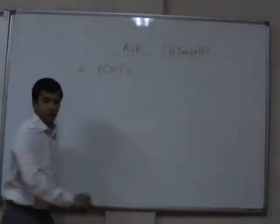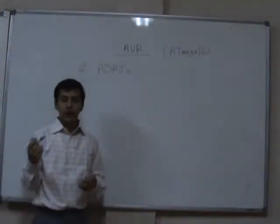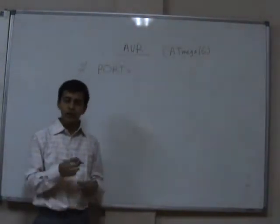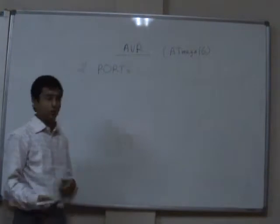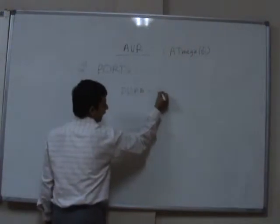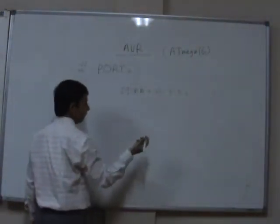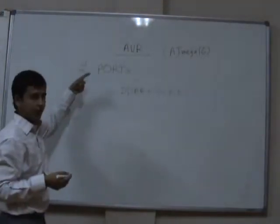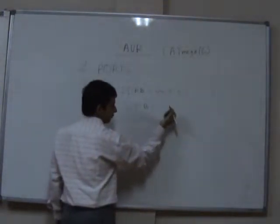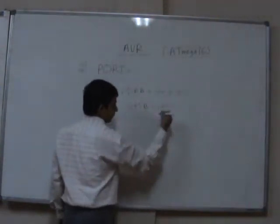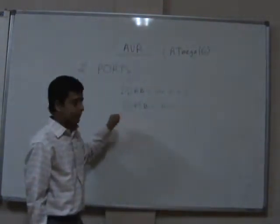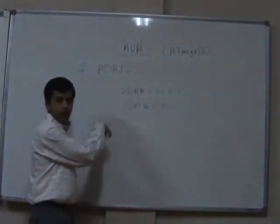Suppose we have configured a particular port as an output port and we want to write data onto that port. Let us take a specific example: we are configuring port B as output and writing some data onto it. First, we configure port B as output. Then we use the port register to write data: PORTB = 100. This will write that value onto the port B pins.